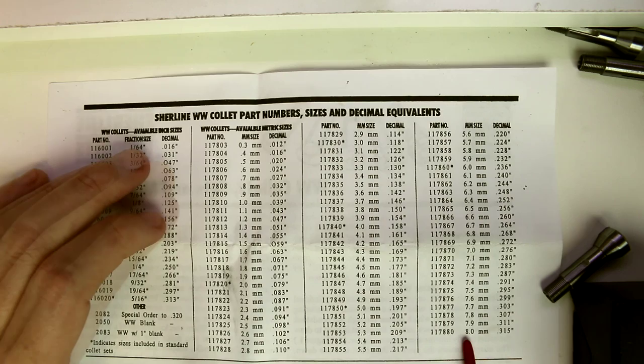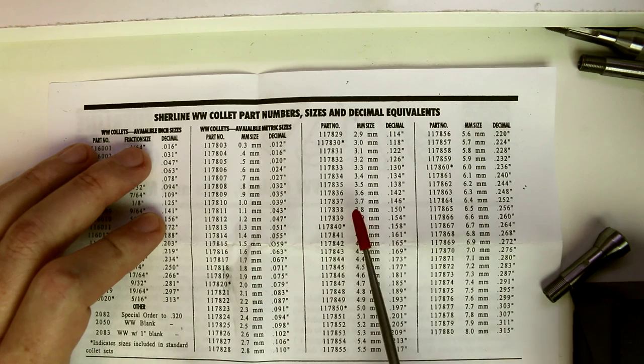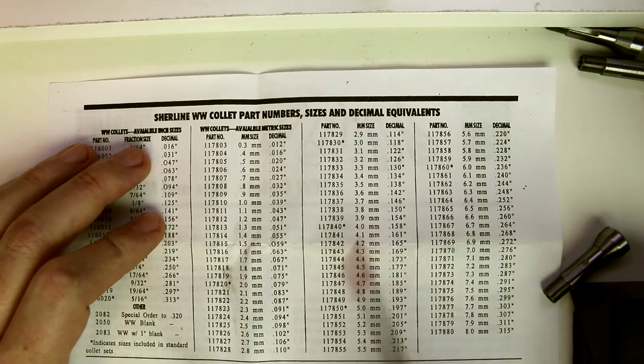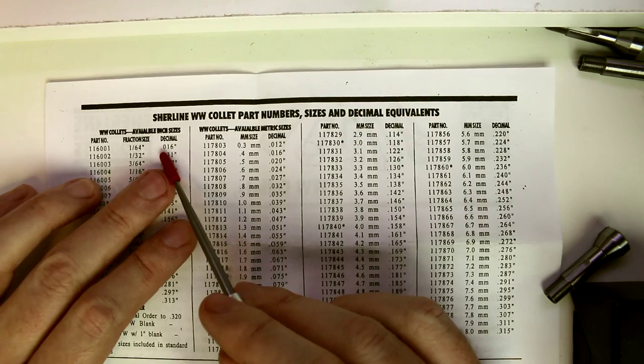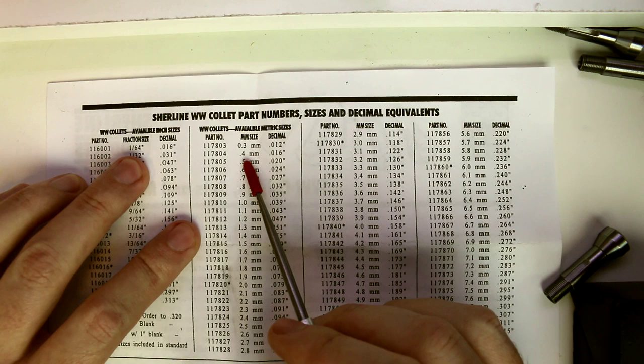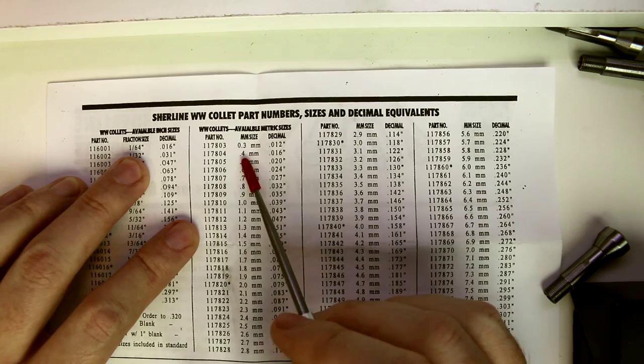Now if you're going to be using them a lot, then typically you'll just buy the metric sizes because the metric sizes are all close enough that they have equivalencies in the fractional size. For example, 1/64 is 0.016, which is also 0.4 millimeters, so you don't need to buy both of those collets because they are the same size even though the printing on them is different. You just have to keep a chart handy so you can do the conversion if you are working with fractional sizes.